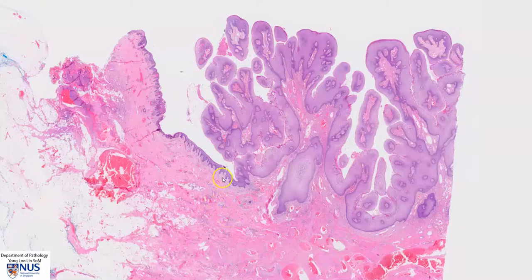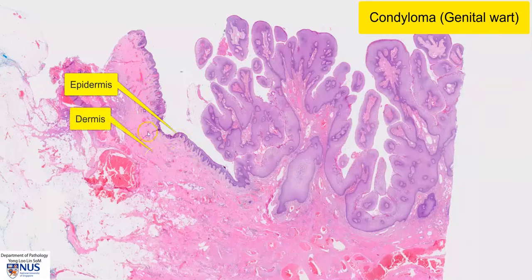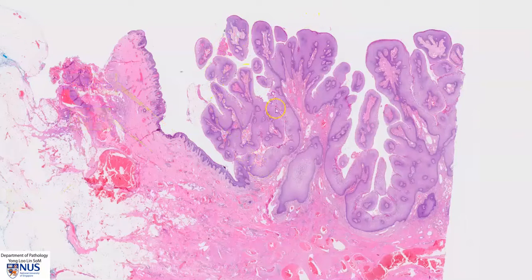This is a virtual microscopy slide of condyloma or genital wart. This is the normal epidermis, the dermis, and then the subcutis. And of course, this very abnormal area where we can see the lesional tissue protruding from the skin. This is the area of the condyloma or the wart.